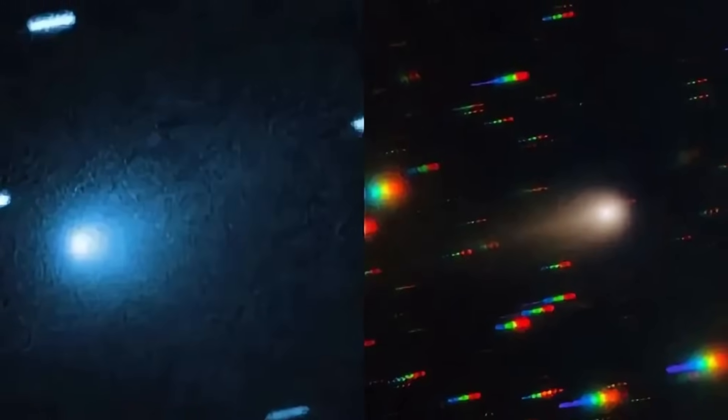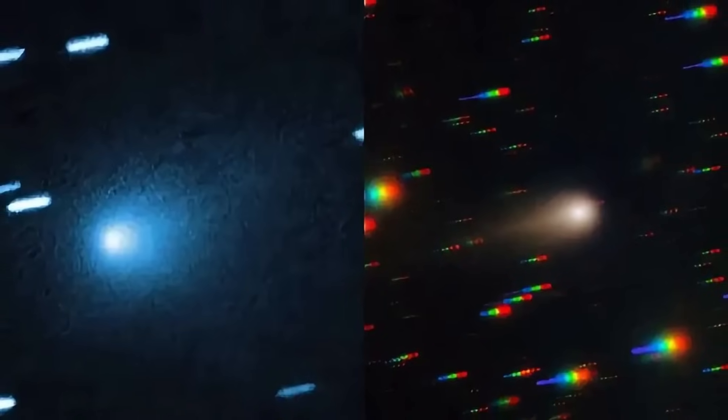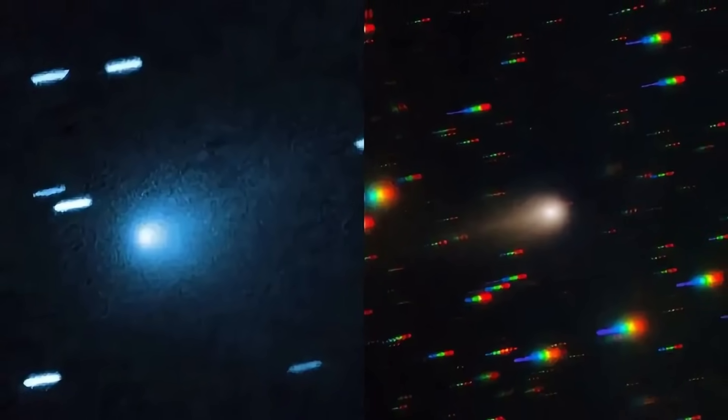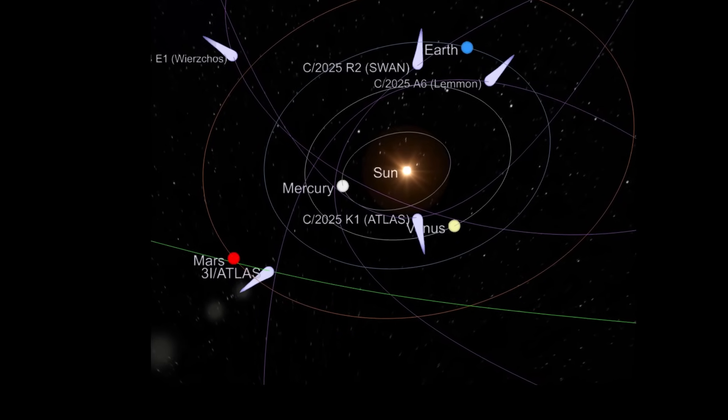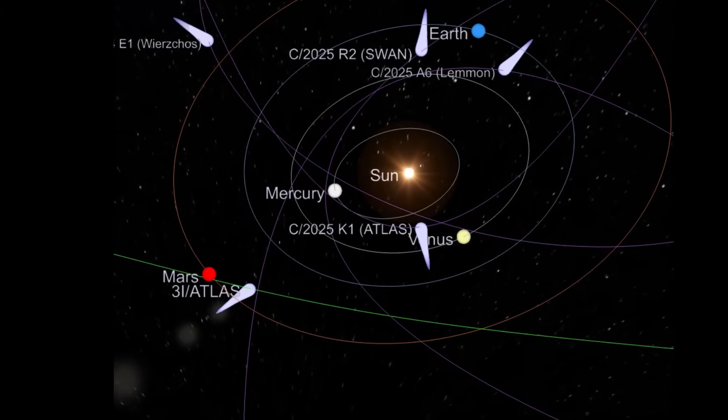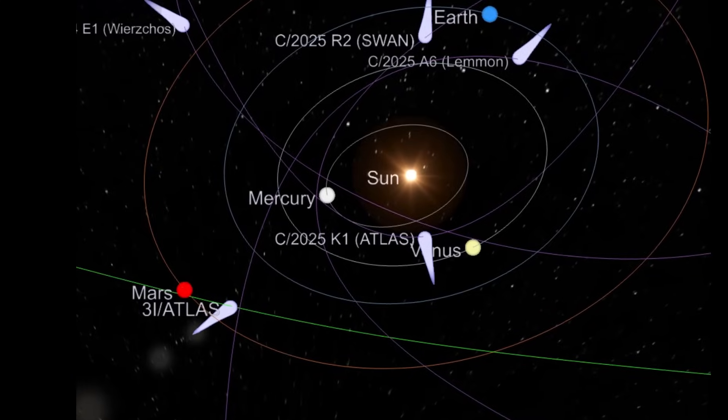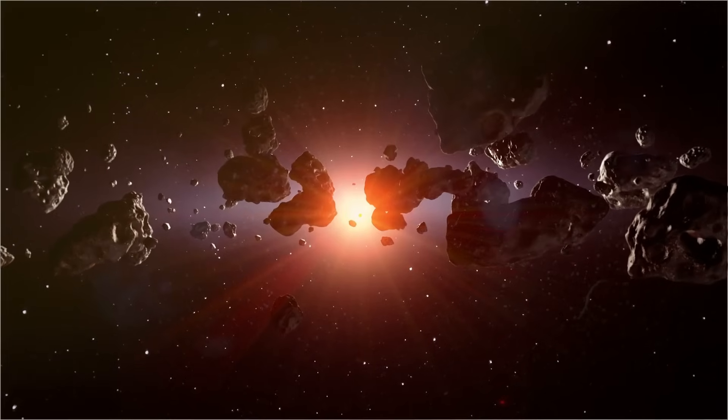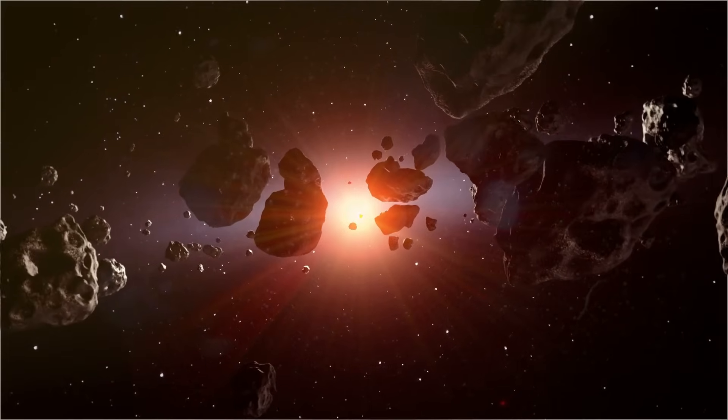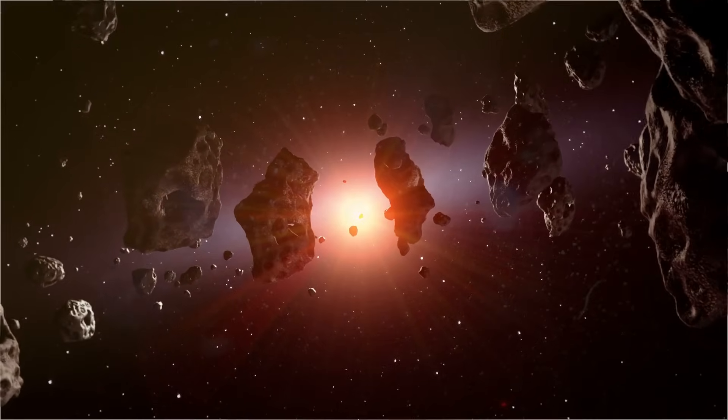This behavior doesn't match the playbook. A comet without a tail should not shine so brightly, while an asteroid reflecting sunlight should not glow with such intensity. The signal is inconsistent—too bright in some respects, and not active enough in others. It is as though the laws that govern ordinary celestial bodies bend when applied to this traveler.